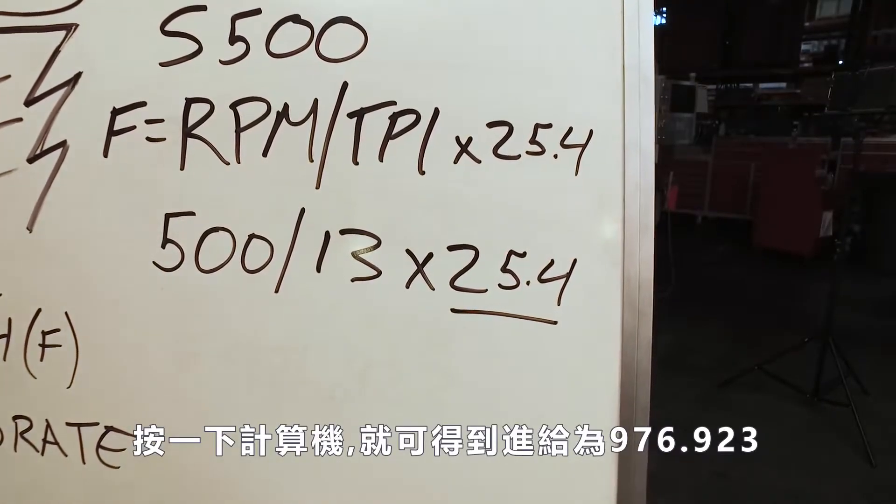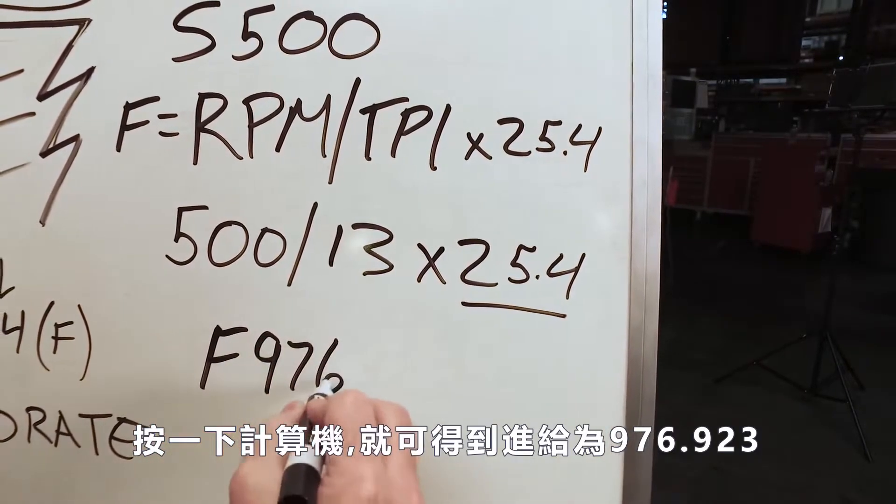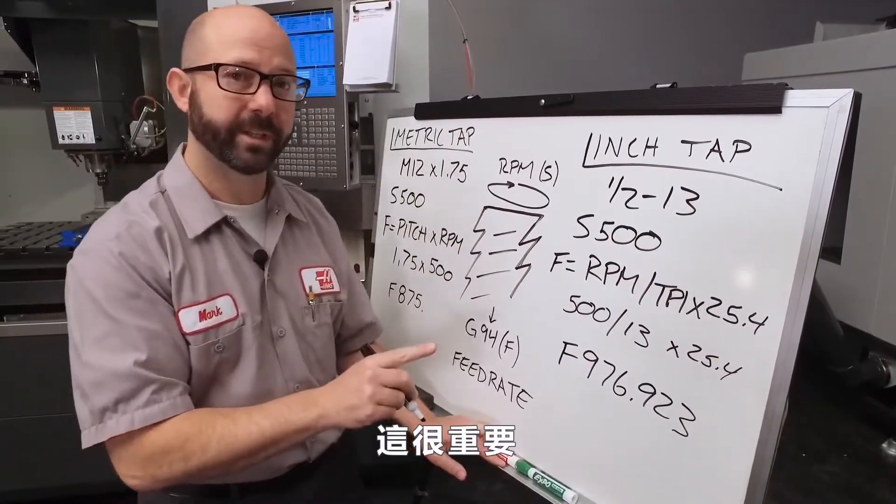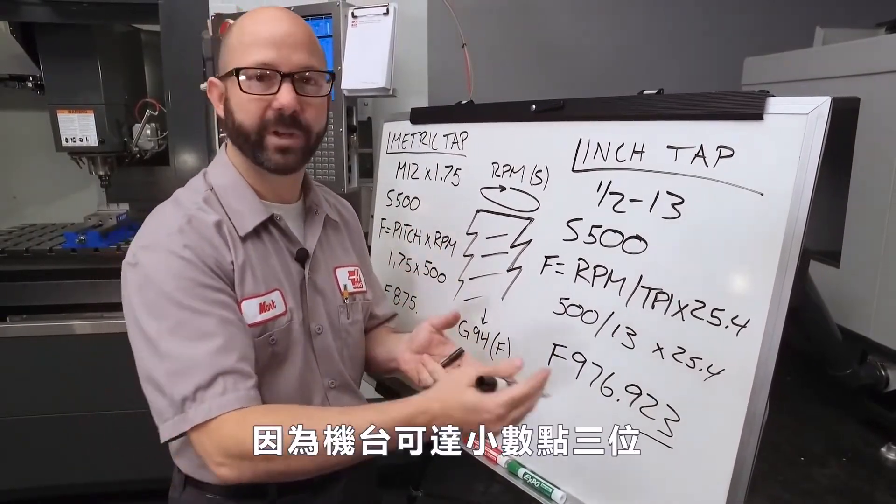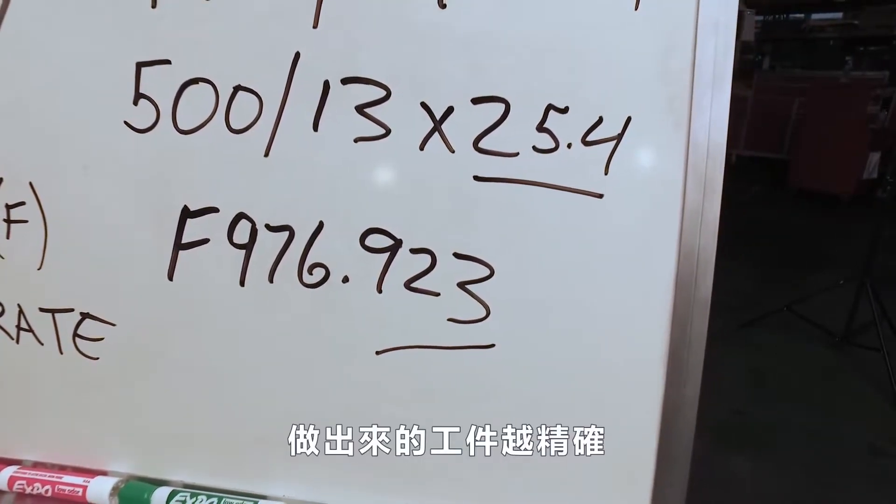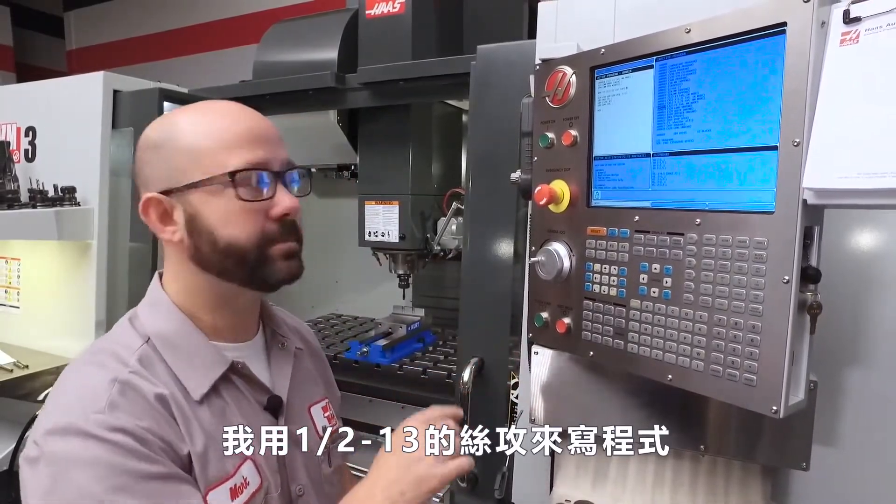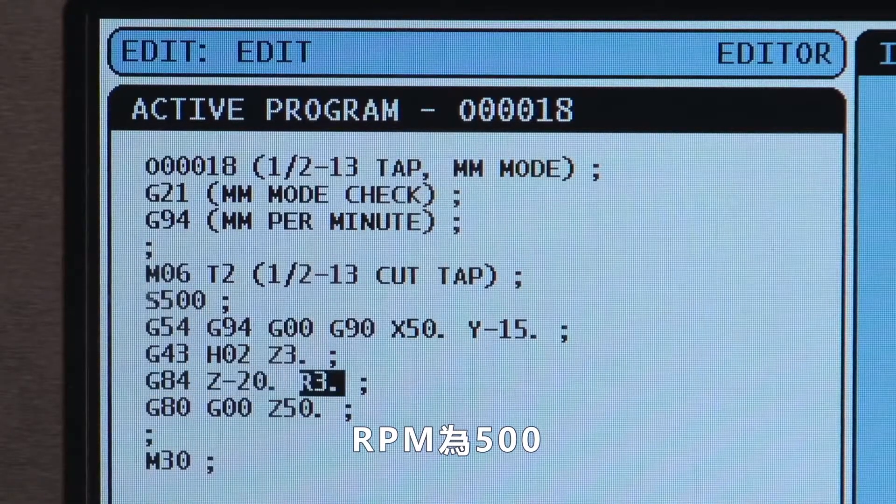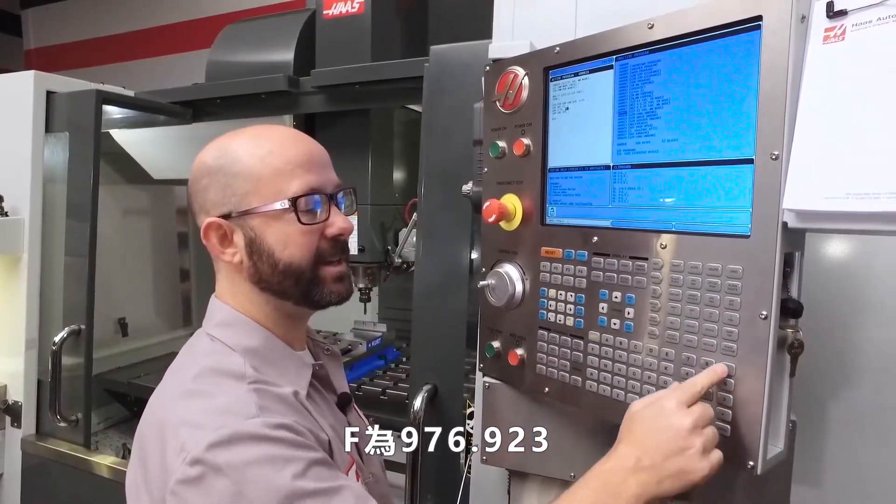Now, when we run this through a calculator, we get a millimeter per minute feed rate of 976.923 millimeters. Now, this is important. We rounded our number out to three decimal places because our machine can handle up to three decimal places. The further out we carry that number, the more accurate our threads are. Now, this is my program for a half 13 tap in millimeter mode. I'm going to enter my RPM as S500, and my feed rate as F976.923.